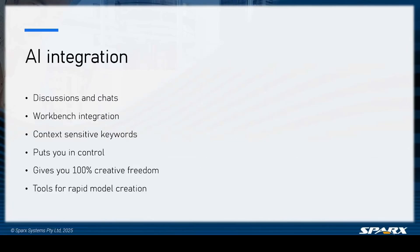So what does Enterprise Architect bring for AI integration? We have the ability to do discussions and chats, workbench integrations, and context-sensitive keywords. It puts you in control, giving you 100% ownership and sign-off of the information that goes into the model before signing off as your formal model — 100% creative freedom. It also has a whole bunch of tools for rapid model creation. Let's dive in and take a look at that now.